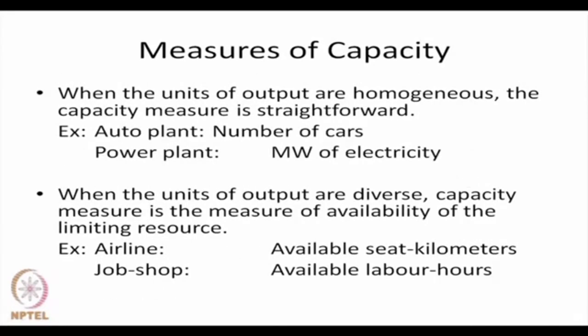Now we discuss how to measure capacity. Usually when the units of output are homogeneous, the capacity measure is straightforward. In an auto plant, output is the number of cars produced in a given time; for a power plant, it is megawatts of electricity. However, when units of output are diverse, capacity measure is the availability of the limiting resource.